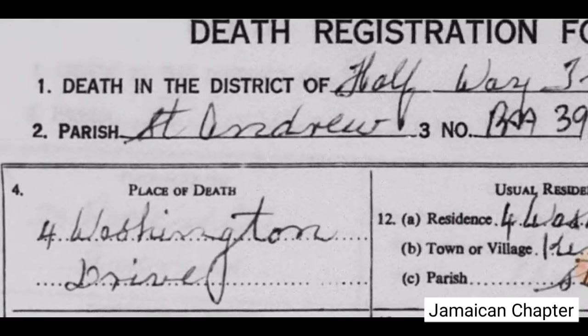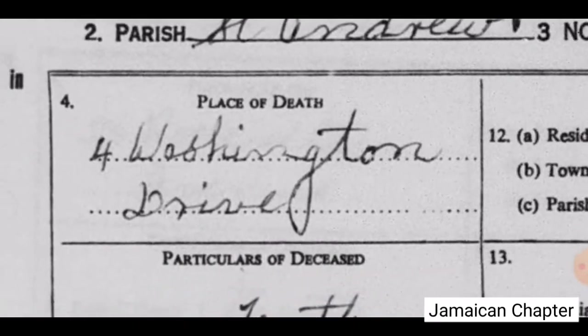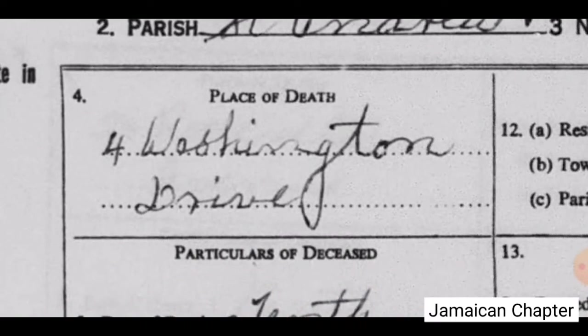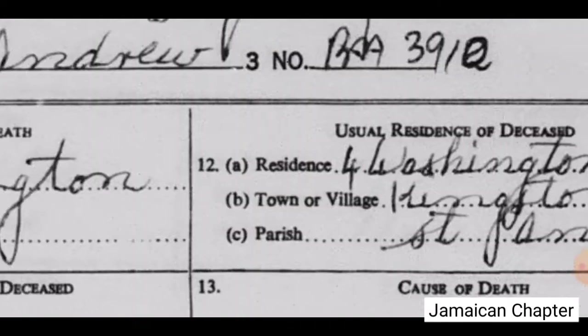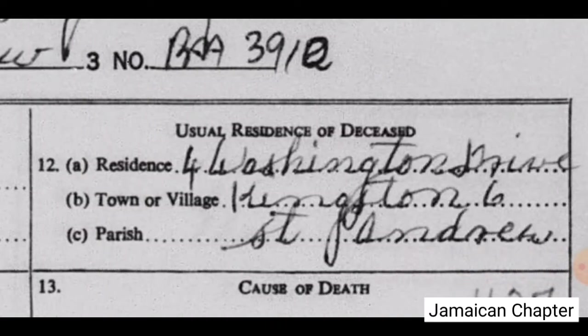On the left side of the form, it says Place of Death: 4 Washington Drive. And on the right side, it says Usual Residence of Deceased: 4 Washington Drive, Kingston 6, St. Andrew.